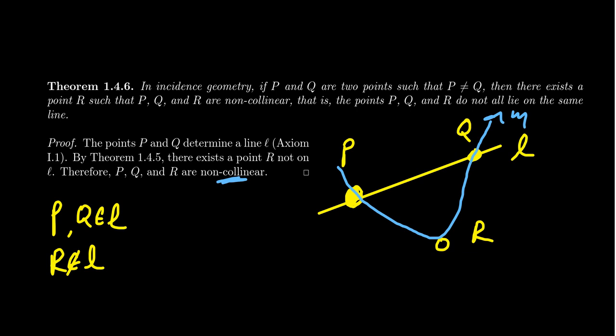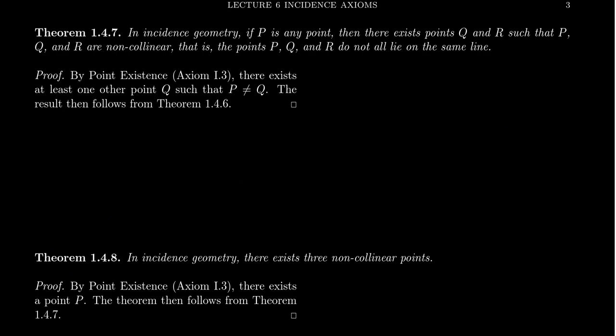So what this theorem tells us is: if you give me any two distinct points, I can find a third point that forms a non-collinear set. Essentially, I can form a triangle given two points. The next theorem says that in an incidence geometry, if P is any point, then there exist points Q and R such that P, Q, and R are non-collinear. This is a little more general — the previous theorem required two points as input; this one only requires one.